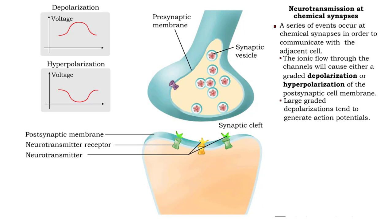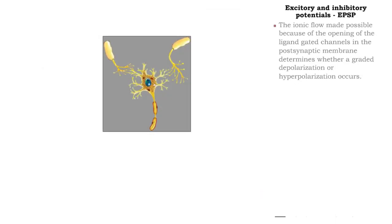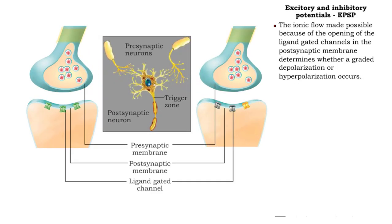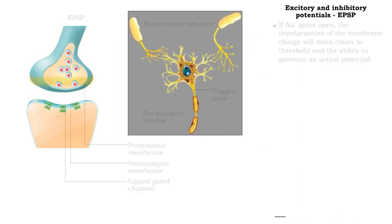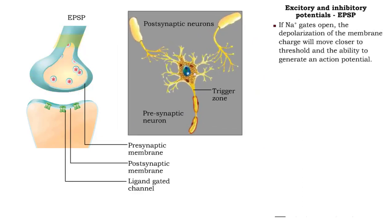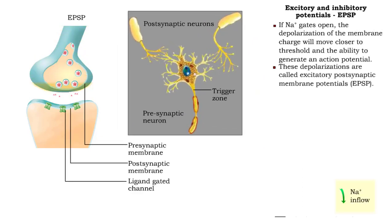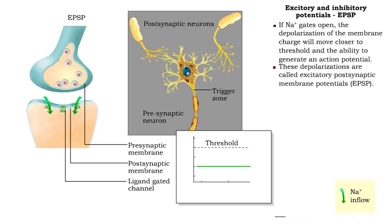If depolarization is at an above-threshold voltage, then an action potential will be generated. The neurotransmitters bind to specific ligand-gated ion channels in the postsynaptic membrane. A graded depolarization or hyperpolarization will occur, depending upon which channels open to ionic flow. Depolarizations, the result of sodium gates opening, stimulate the generation of action potentials. These are known as excitatory postsynaptic potentials, or EPSPs.